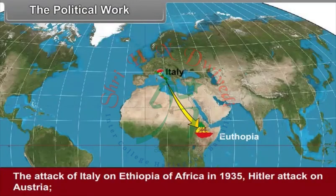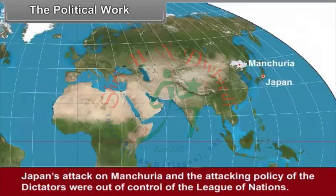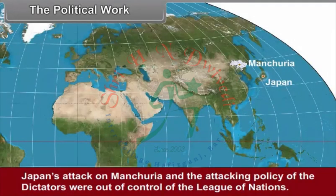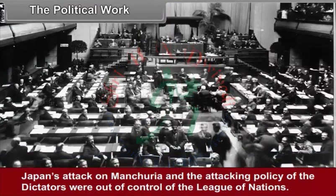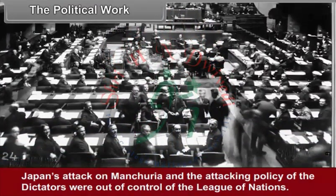The attack of Italy on Ethiopia of Africa in 1935, Hitler's attack on Austria, Japan's attack on Manchuria, and the aggressive policies of the dictators were all out of the control of the League of Nations.